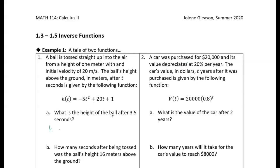That's pretty straightforward — we can just take the height function and put in 3.5. We calculate negative 5 times 3.5 squared plus 20 times 3.5 plus 1, put that into the calculator, and get 9.75 meters.